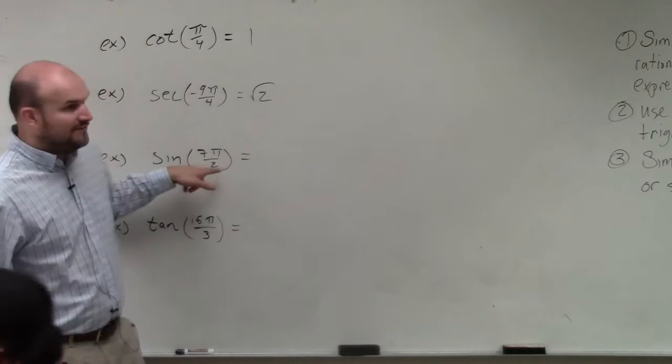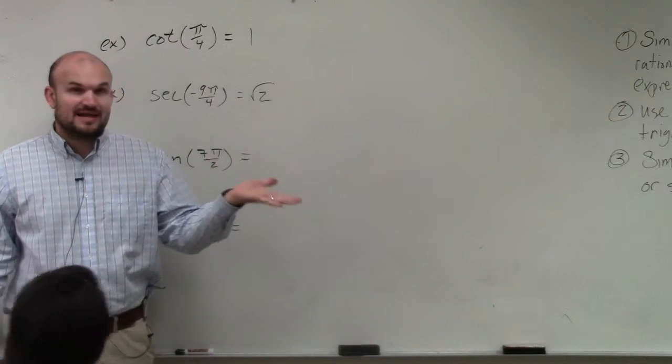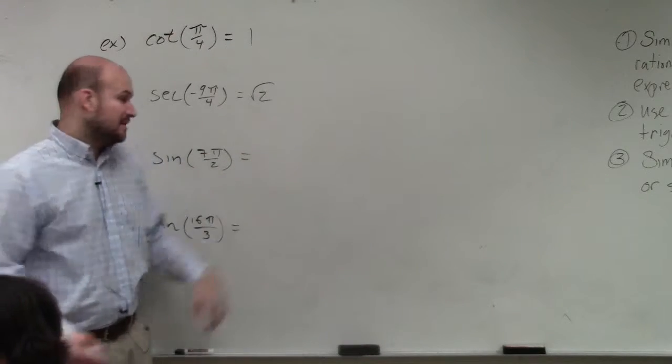So when I'm using 2 as my denominator, what would be all the way around the circle? 4 pi over 2, right?